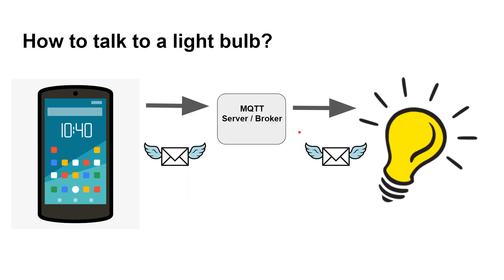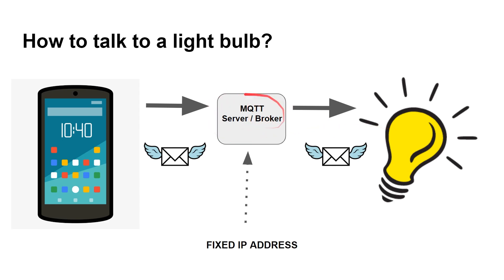This is where an MQTT server — sometimes called a broker — comes into it. I can send a message from the smartphone over to this server, this gateway running on your network, and then it sends it over to the light bulb. This has a fixed IP address — it could be a desktop, could be a Raspberry Pi, which is what I'm running it on — with a static IP address on your network.